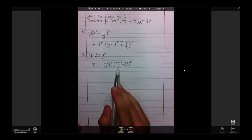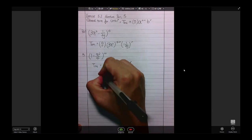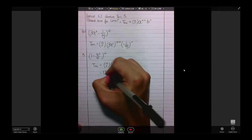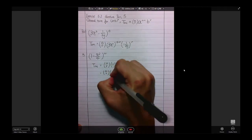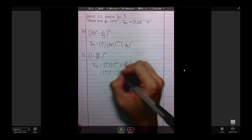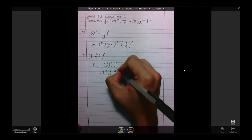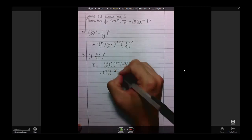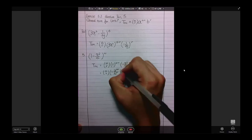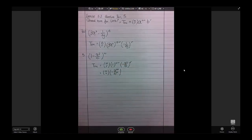1 to the power of anything still remains as 1, so what I'm left with is 10 choose r, negative x. If you multiply the power in, it would be x to the power of 2r over 4 to the power of r. And, this is my general term for 1 minus x squared over 4 to the power of 10.